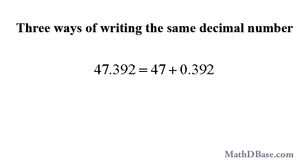The number 47.392 is a mixed decimal. The whole number part is 47, and the part that is less than a whole is 0.392.